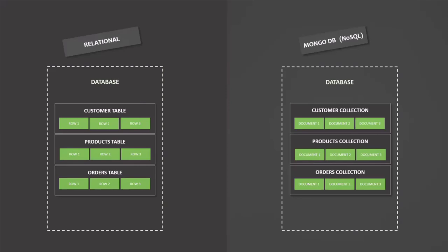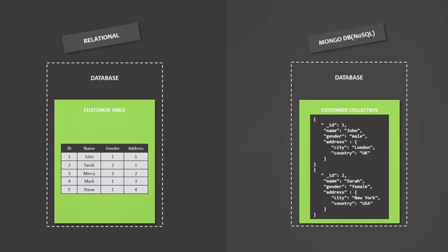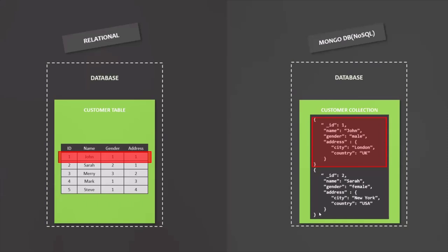A document stores data in JSON-like format, which makes our job a lot easier when we start dealing with documents from our Node.js application, because dealing with JSON data in Node.js is a lot easier. We don't have to perform extra operations on data received from the database. If we represent customer data in MongoDB, instead of a table we have a customer collection, and in that collection we have documents — each JSON object is one document, representing one customer. A document is essentially a JSON object with fields consisting of key-value pairs.